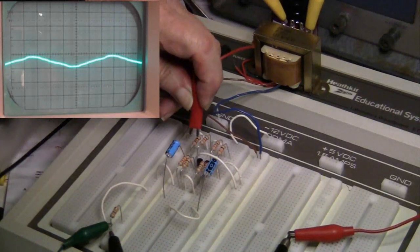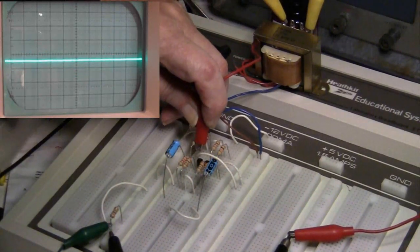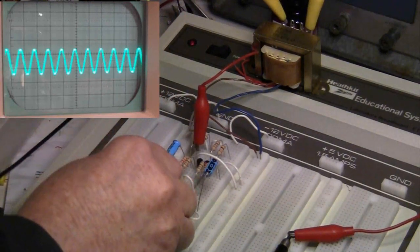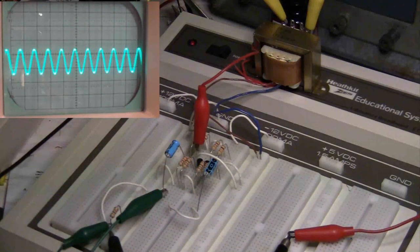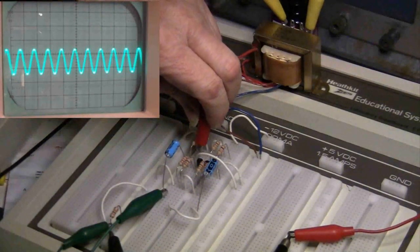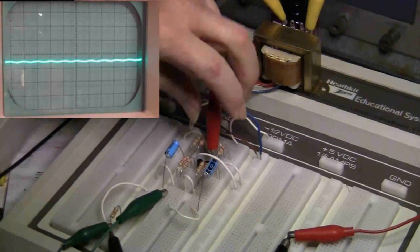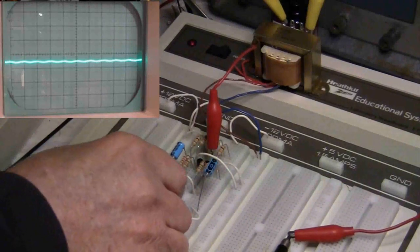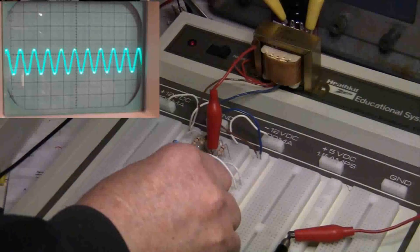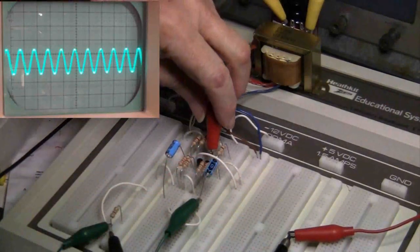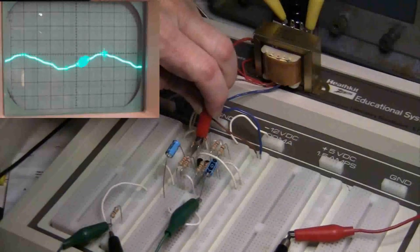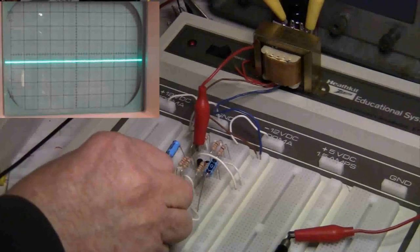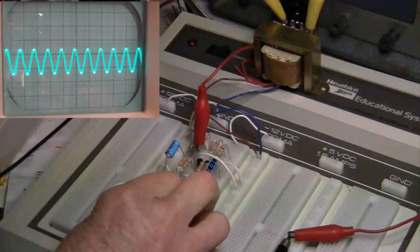Here I'm going to hook up the scope to the output of transistor 1. Now I'm going to inject into 1. We hear the tone and we can see the trace on the scope. Now I'm going to move the scope over to transistor 2, and we'll see that there's almost nothing there. Now I'm going to move the inject into 2. We can hear the tone and see the trace. Move the scope over to 1, and there's almost no trace.